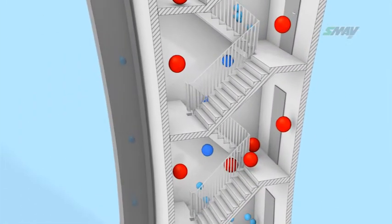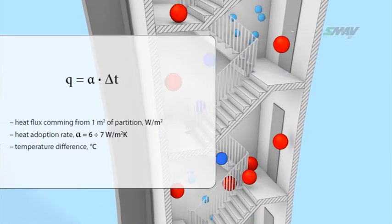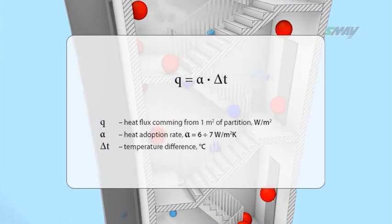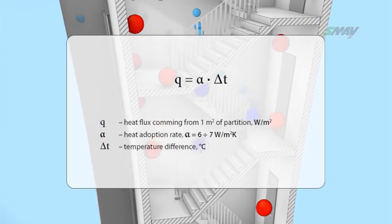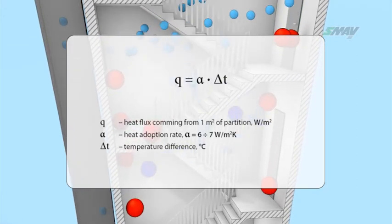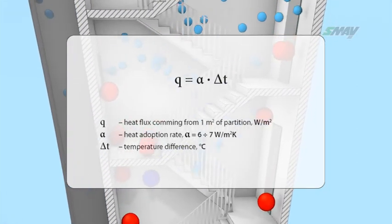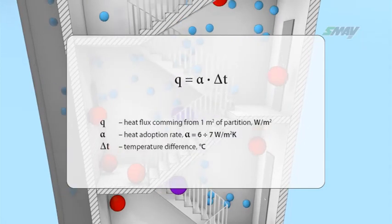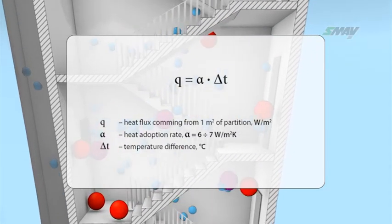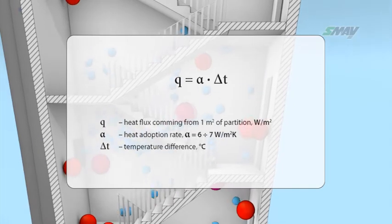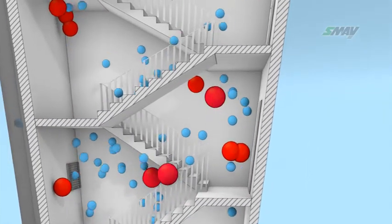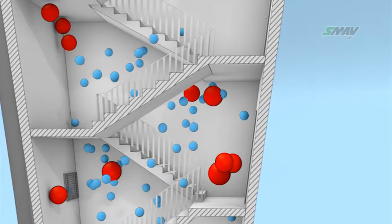The stack effect occurs due to the heating up of air particles by walls and stairs. The amount of heat dissipated by the walls is proportional to the difference in temperature between the air and the partitions. For example, if the temperature difference is 20 degrees, the walls may dissipate up to 140 watts from every square meter, as a result of which air density falls, causing buoyancy to push it upwards.